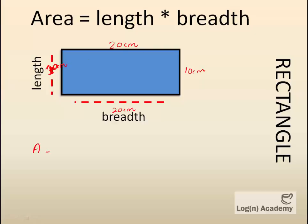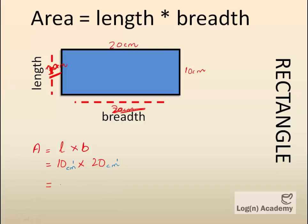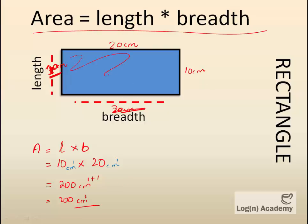Now we will find the area of this rectangle. The breadth is 10 cm and the length is 20 cm. When we multiply them, the answer is 20 multiplied by 10, which equals 200 cm squared. This is how we use the area formula. The area shown here in blue color gives us 200 cm squared.